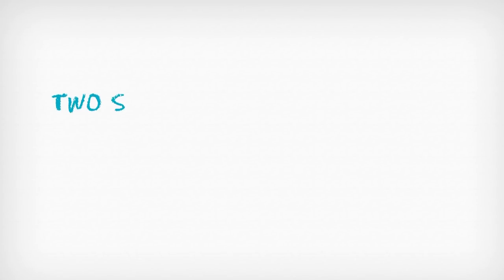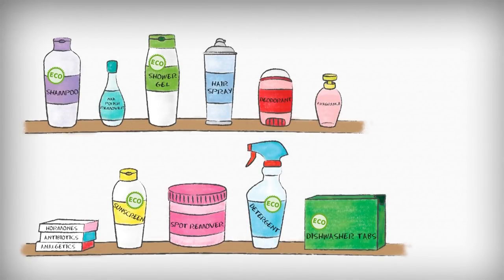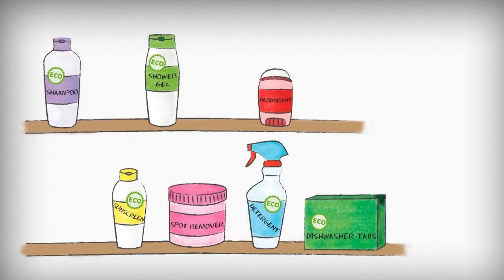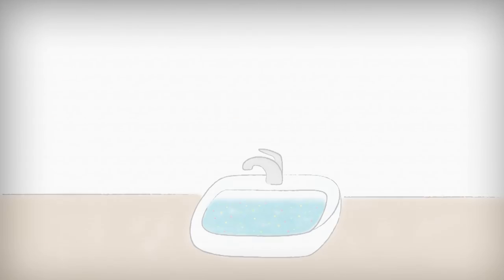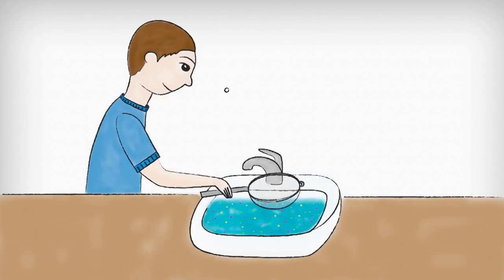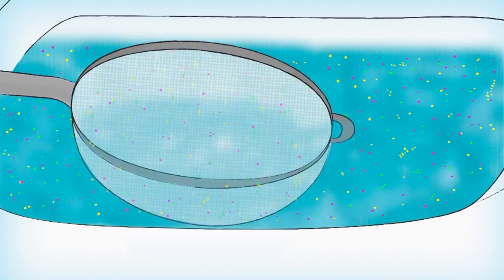Emerging pollutants must be addressed in two simultaneous processes. First, personal consumption habits must change and individuals must work to reduce the amount of products that they consume. Secondly, emerging pollutants that inevitably end up in our water need to be effectively removed.